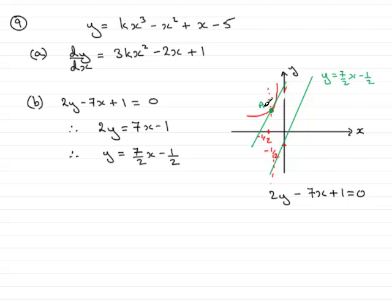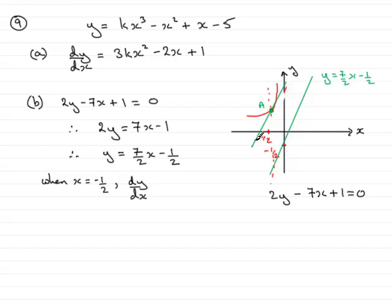Now because the tangent is parallel to the line, we know that the tangent would have the same gradient as the line — that's 7 over 2. So I know that the gradient of the tangent at A is 7 over 2. And dy/dx works out the gradient at any point on the curve. So I know that when x equals minus a half, if I substitute it into dy/dx I should get the gradient of 7 over 2. So when x equals minus a half, dy/dx should equal 7 over 2. All I need to do is substitute these values into my equation from part A.